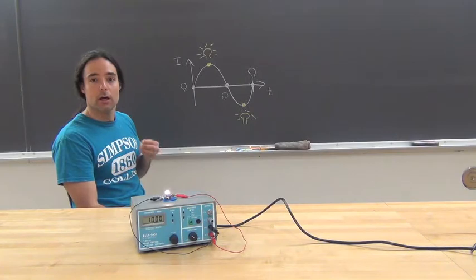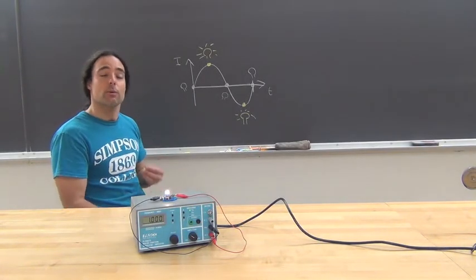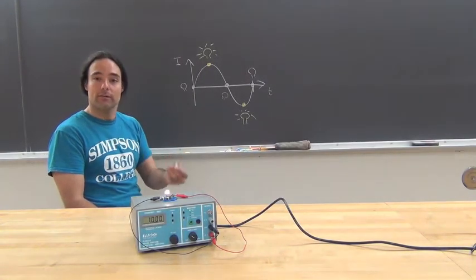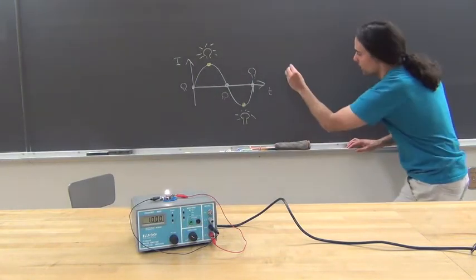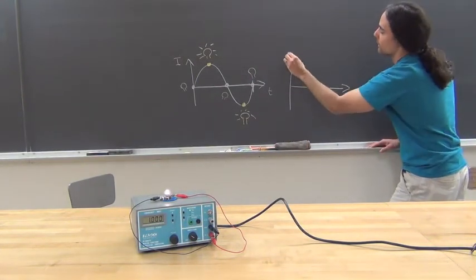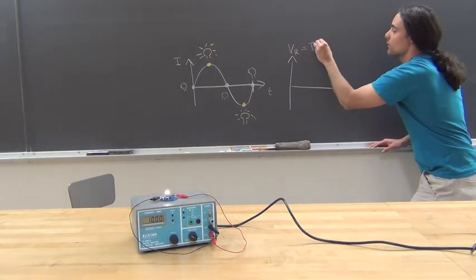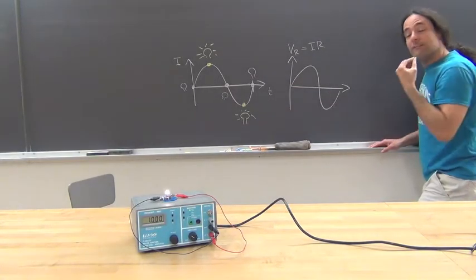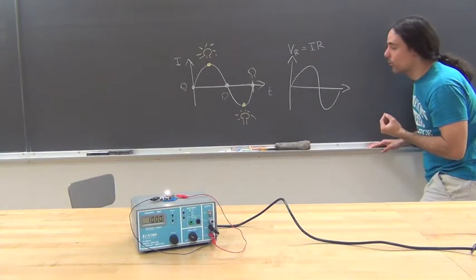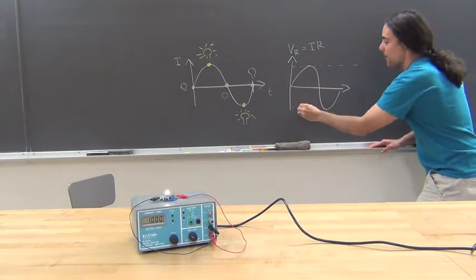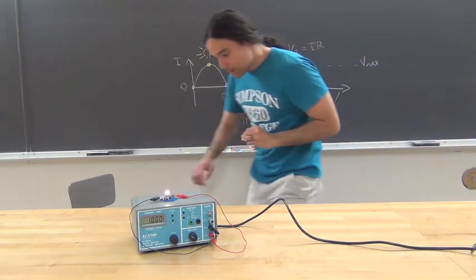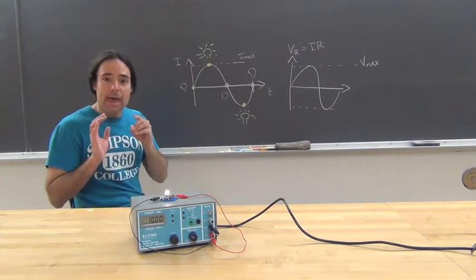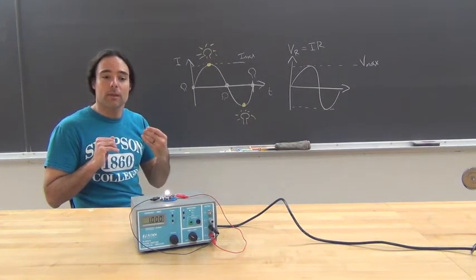This is a plot of the current as a function of time. Interestingly, we're still going to get the same shape when I plot voltage as a function of time — the only difference is I'll be measuring in volts. The reason I get the exact same shape is because the voltage across my light bulb is just equal to the current times the resistance. So if the current is going to be sinusoidal, the voltage drop across the resistor has to be the exact same sinusoidal function. The maximum and minimum values are going to be some maximum voltage, and for the current, some maximum current.